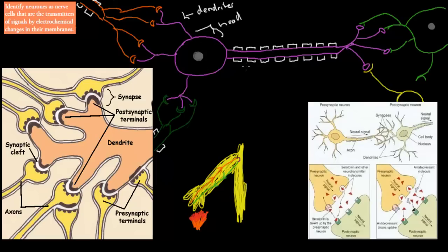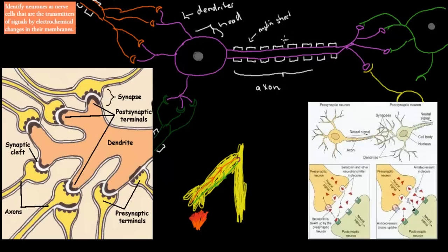Then we've got this tail, called the axon. On the axon we have these myelin sheets, which are these structures shown in white. And in between, we have small gaps — I've exaggerated these gaps here — they're called the nodes of Ranvier, and I'll probably misspell that.